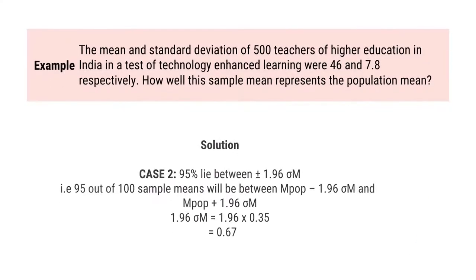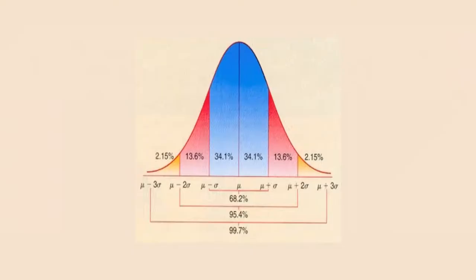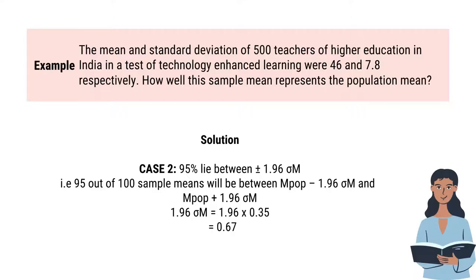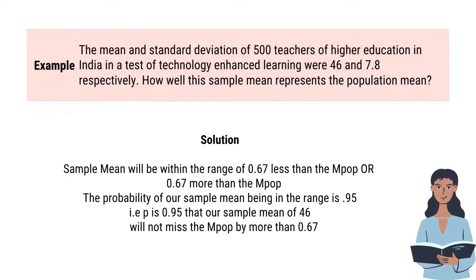Case 2: 95% of cases lie between plus minus 1.96 sigma m. 95 out of 100 sample means will be between population mean minus 1.96 sigma m and population mean plus 1.96 sigma m. Let us calculate 1.96 sigma m: 1.96 into 0.35 equals 0.67. The sample mean will be within a range of 0.67 less than or 0.67 more than the population mean. The probability of our sample mean being in this range is 0.95. That is, P equals 0.95 — our sample mean of 46 will not miss the population mean by more than 0.67.